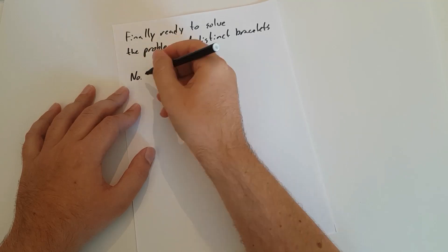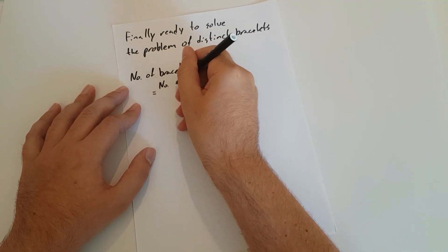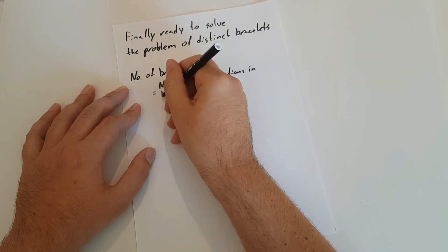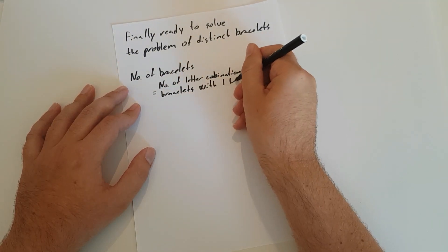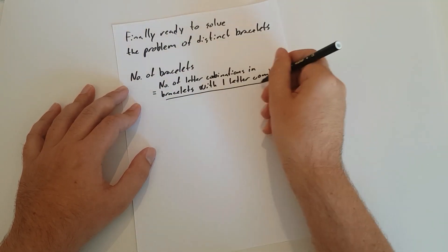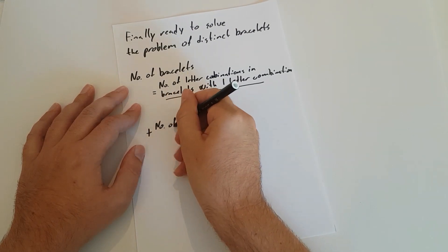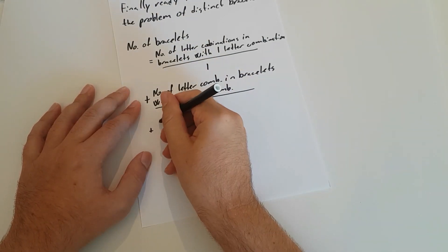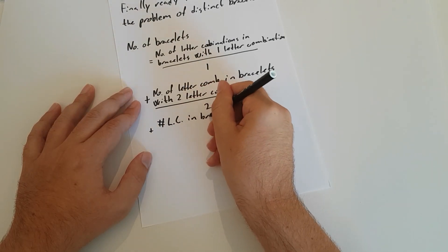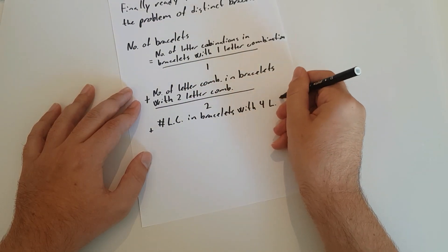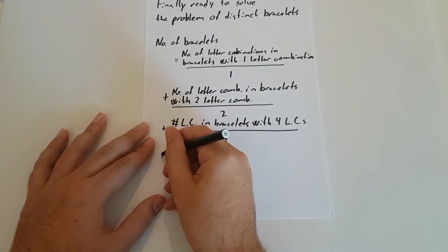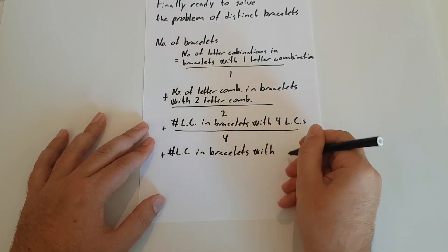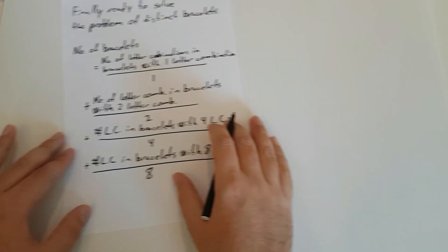The total number of bracelets is: the number of letter combinations from bracelets with a single letter combination, divided by one; plus the number from bracelets with two different letter combinations, divided by two; plus the number from bracelets with four letter combinations, divided by four; plus the number from bracelets with eight letter combinations, divided by eight.